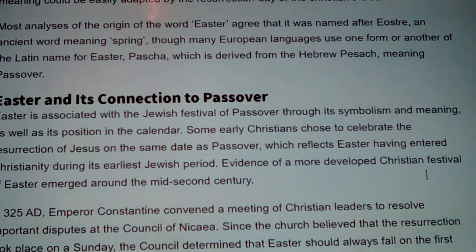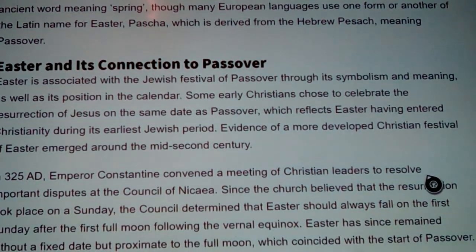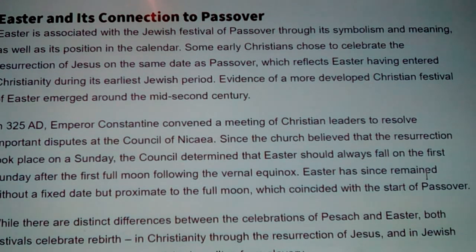Easter is associated with the Jewish festival of Passover through its symbolism, meaning, and position in the calendar. Some early Christians chose to celebrate the resurrection of Jesus on the same date as Passover, reflecting Easter having entered Christianity during its earliest Jewish period. Evidence of a more developed Christian festival of Easter emerged around the mid-2nd century. In 325 AD, Emperor Constantine — a Flavius — convened the Council of Nicaea to resolve important disputes. Constantine was a Flavius, as was Titus, who came after the Caesars.